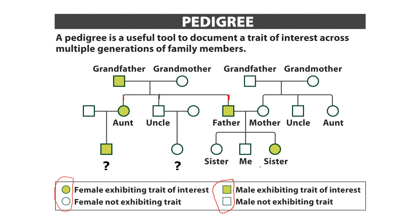So if this position is you, what would your relationship be to either of the individuals with the question marks? Your father's brother was his uncle and his sister was your aunt — they have kids with other spouses, so those are your cousins.